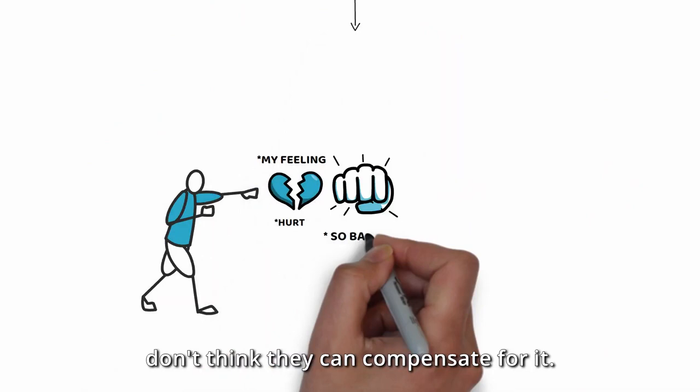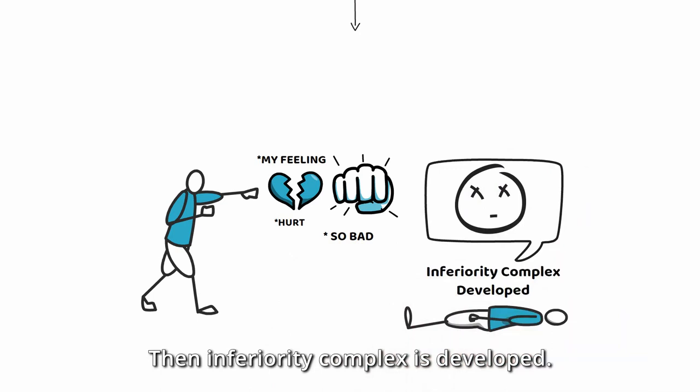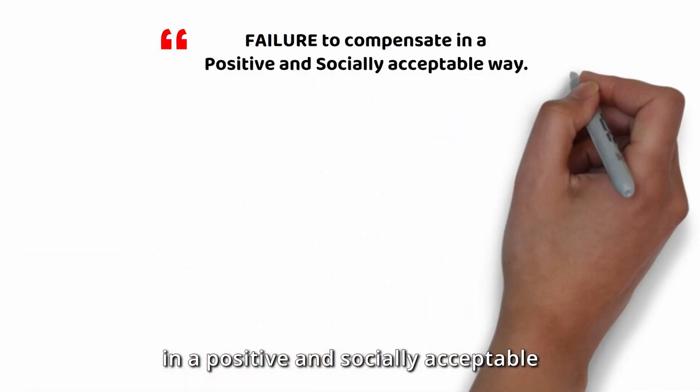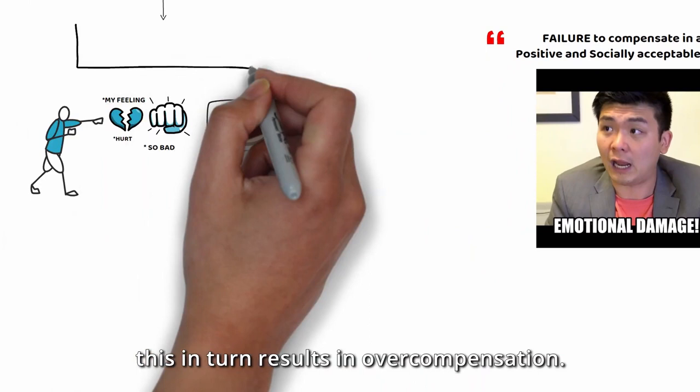But sometimes, the feeling of inferiority is so strong that people don't think they can compensate for it. Then inferiority complex is developed. This refers to the failure to compensate in a positive and socially acceptable way, so the feeling of inferiority is always there. This in turn results in overcompensation.